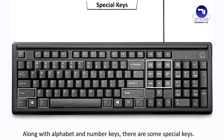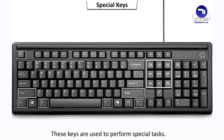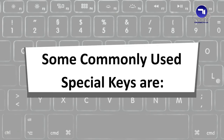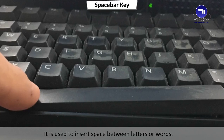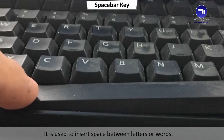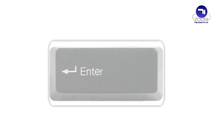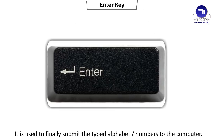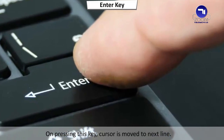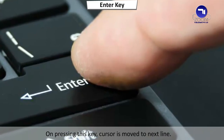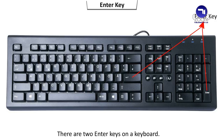Along with alphabet and number keys, there are some special keys. These keys are used to perform special tasks. Some commonly used special keys are: the Spacebar key — it is the longest key on the keyboard and is used to insert space between letters or words. The Enter key is used to finally submit the typed alphabet or numbers to the computer. On pressing this key, the cursor is moved to the next line. There are two enter keys on a keyboard.